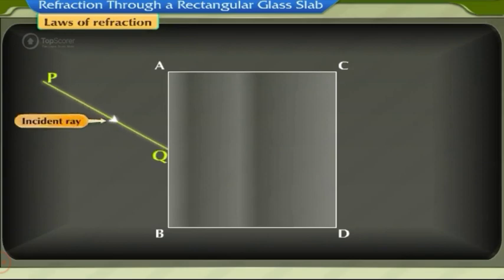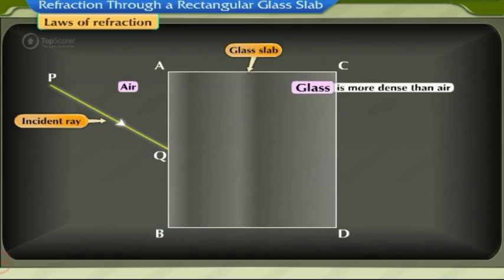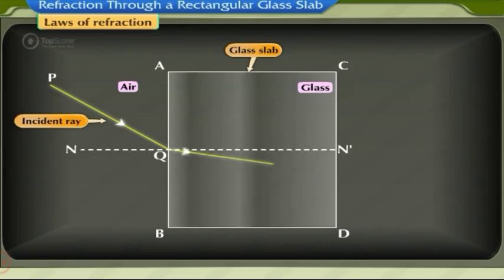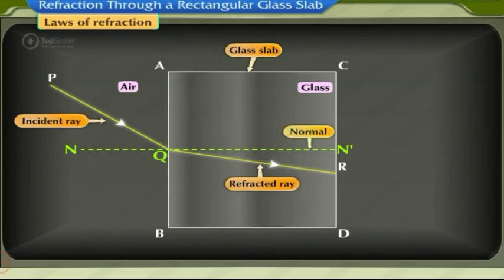Laws of refraction. Consider a ray of light PQ incident obliquely at point Q on the surface AB of a glass slab. Since air and glass are two transparent media and glass is more dense than air, the ray of light gets deviated towards the normal and travels along the path QR. Here, NQN' is the normal at the point of incidence.